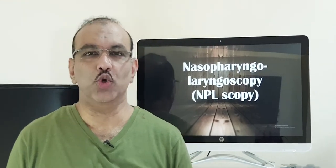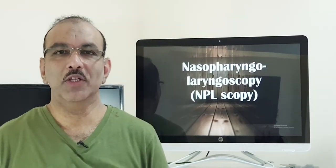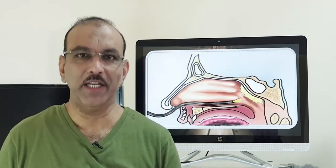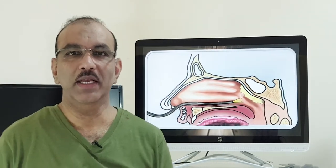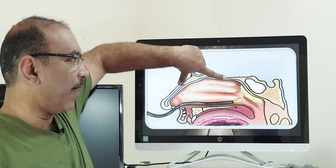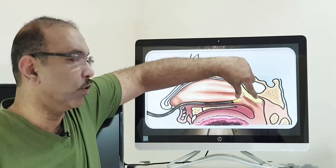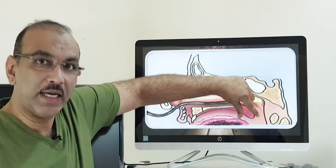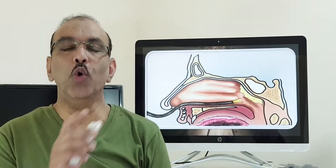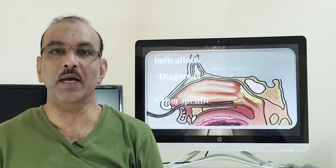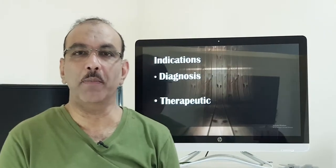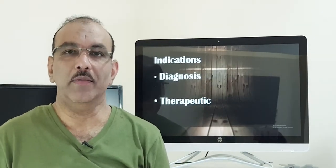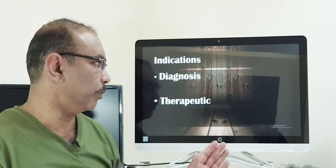Fibro-optic ENT endoscopy. With this fibro-optic ENT endoscopy, we can visualize the whole upper airway, which includes the nasal cavity, the part behind the nose which is called the nasopharynx, the part behind the tongue, as well as the voice box and both sides of the voice box. This whole area can be completely examined with the help of a fibro-optic ENT endoscope.